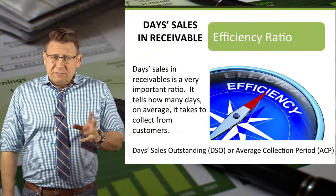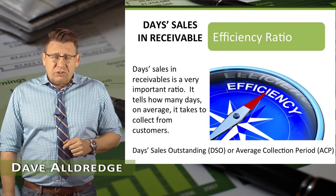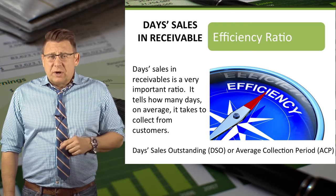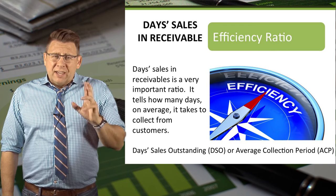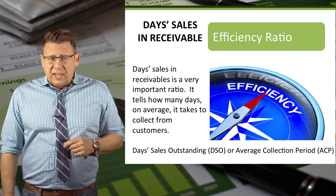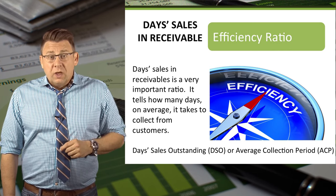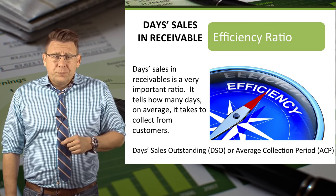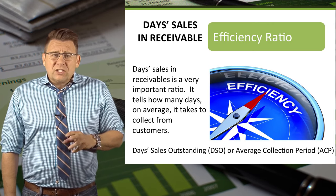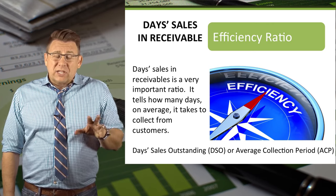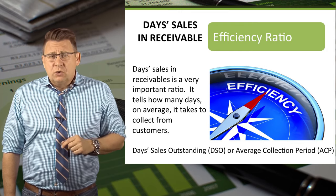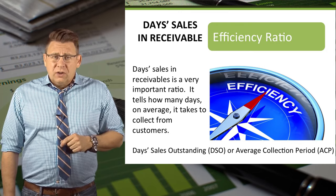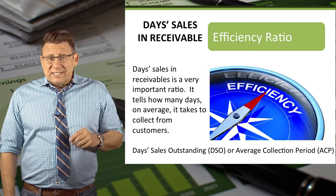Days sales in receivable is a very important ratio because it tells us how many days on average it takes to collect from our customers. It's really a variant of accounts receivable turnover ratio, although more widely used than AR turnover ratio. It also has a few other common names like days sales outstanding, or DSO, or average collection period, or ACP.